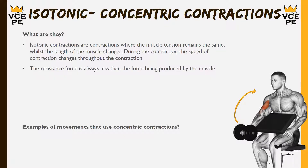We need to understand that the resistance force is always going to be less than the force produced by the muscle. Looking at the picture here, the weight held in the hand is less than the force being produced by the bicep — the bicep is producing enough force to move that weight. If we can't move that weight while trying, that's a different type of contraction we'll look at a little bit later.